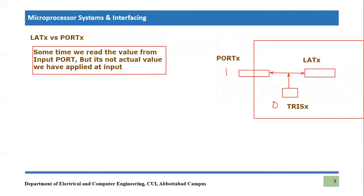Now consider the case when we have applied an input of one at this pin, but we haven't configured this pin as an input pin — zero is stored at TRIS. What is going to happen: the direction of this connection would be like this — the latch is actually transferring information to the port, but we are receiving one at the pin. So we will receive one at the pin, but it will be overwritten by whatever data comes from the latch and stored at the pin. We will not be able to read the actual value being applied from the outside world. So how do you solve this problem? You have to configure the TRIS register appropriately.